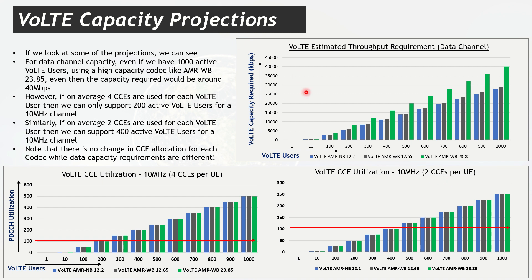In summary, when dimensioning VoLTE capacity, the PDCCH channel typically becomes the bottleneck before PDSCH does. In the next video, I will explain how to tackle and relieve this PDCCH congestion for VoLTE. Stay tuned — I hope you liked it, please subscribe, thank you!